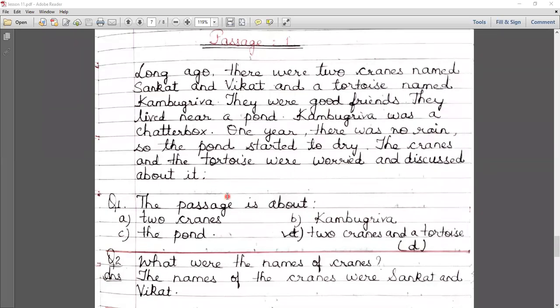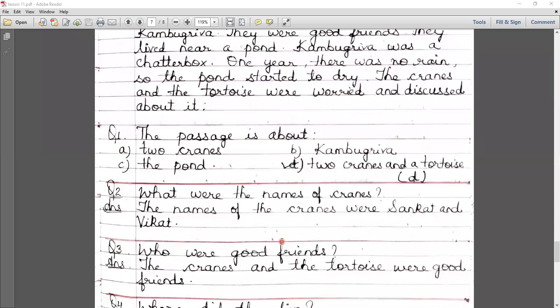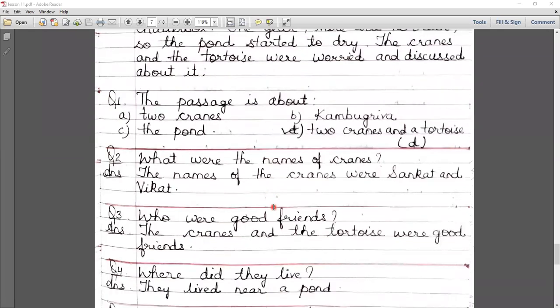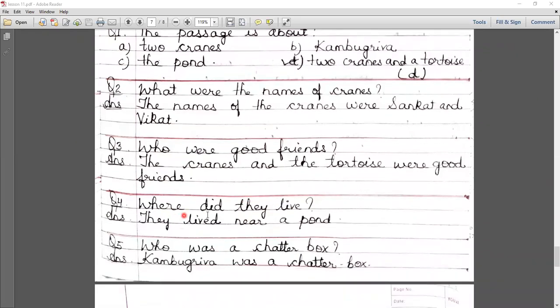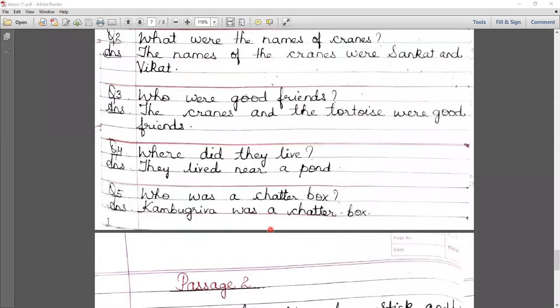This passage is about - what is this passage about? So the passage is about the cranes, Kambugriva, the pond, two cranes and the tortoise. Question number two: what were the names of the cranes? Yes, the names of the cranes were Sankat and Vikant. Question number three: who were good friends? Yes, the cranes and the tortoise were good friends. Question number four: where did they live? They lived near a pond. Who was a chatterbox? Kambugriva.